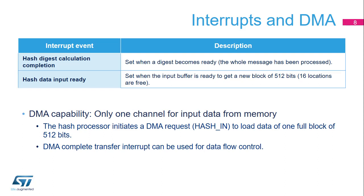An interrupt in the nested vectored interrupt controller, or NVIC, is triggered when a hash digest has been successfully calculated, or when the hash processor is ready to accept a new block of data. In direct memory access, or DMA mode, requests are generated internally for incoming data. The DMA channel must be configured in memory-to-peripheral mode with a data size equal to 512 bits.